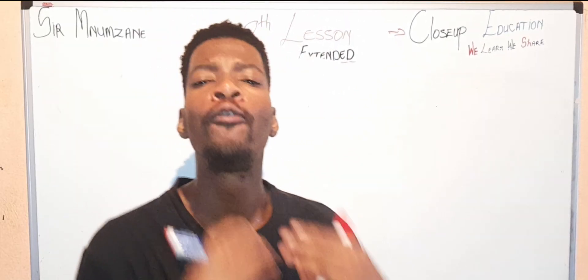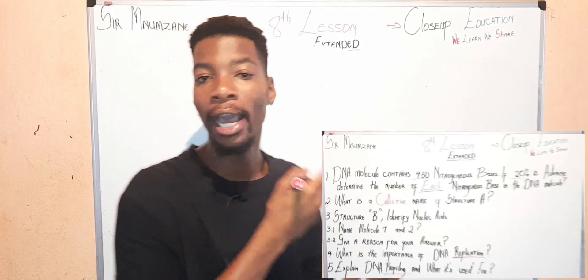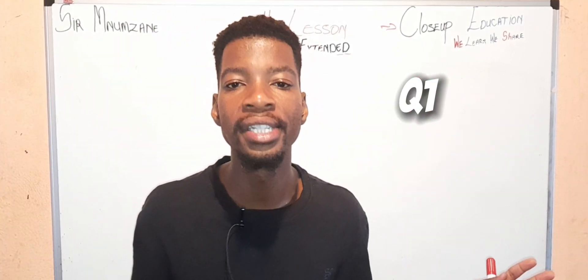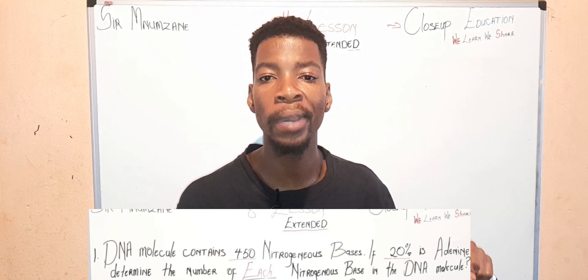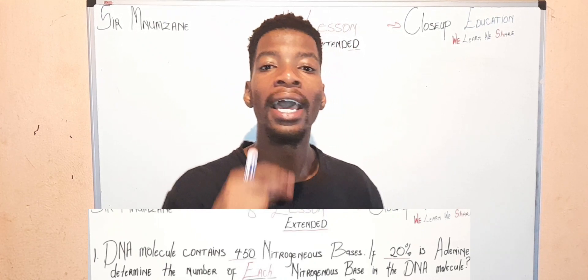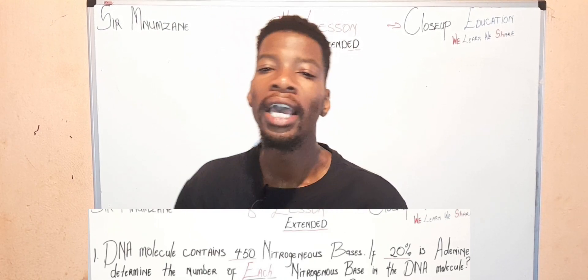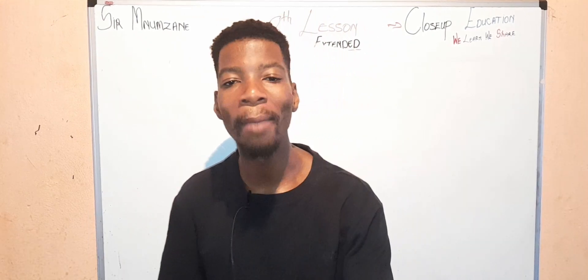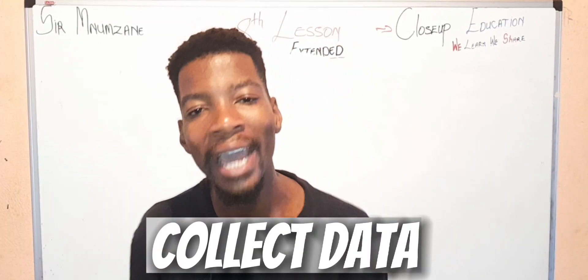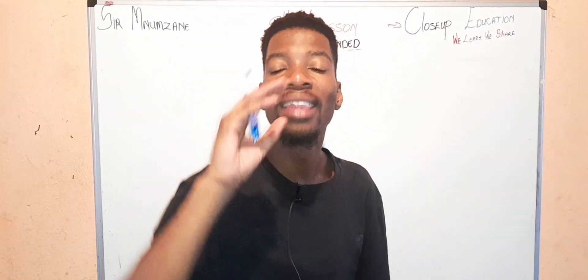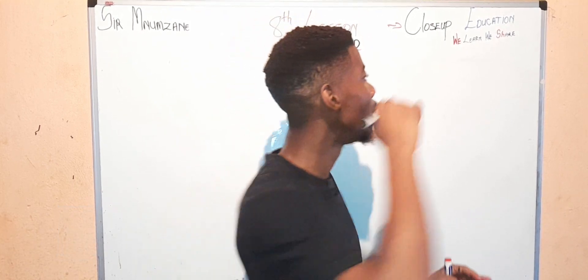Yes, miner is done. Thank you very much into doze. In order to fully understand the two types of nucleic acid, you have to answer these questions. Number one, our first question says the DNA molecule contains 450 nitrogenous bases. If 20% is adenine, determine each nitrogenous base found inside that DNA molecule. Remember, in order to answer any math question you have to first collect data.